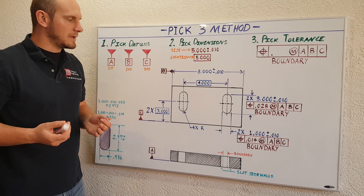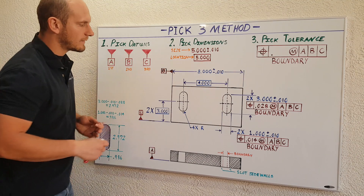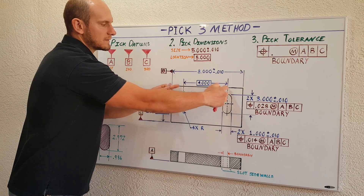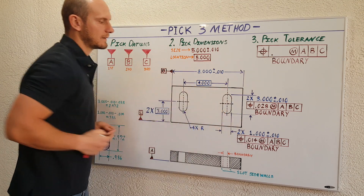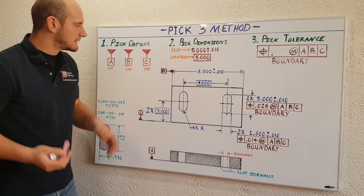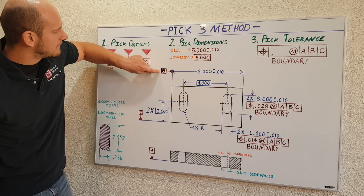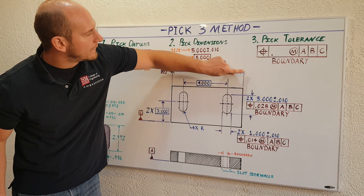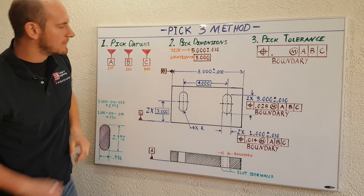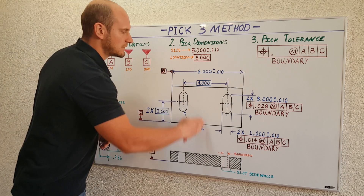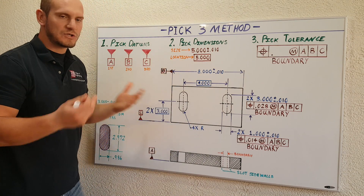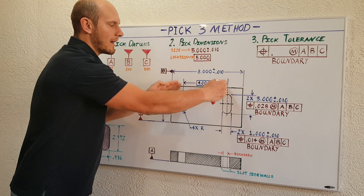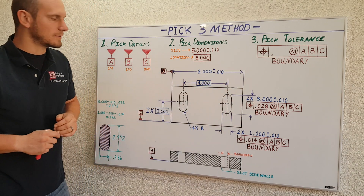For my second datum B, I want the machinist to use the center plane of this part and then move outwards to begin locating these slotted features. To do this, I simply attach the datum symbol directly in line with this overall width dimension that's associated with that center plane. So the machinist should probe the part, find the center plane, and then move outwards to begin locating the slotted features.